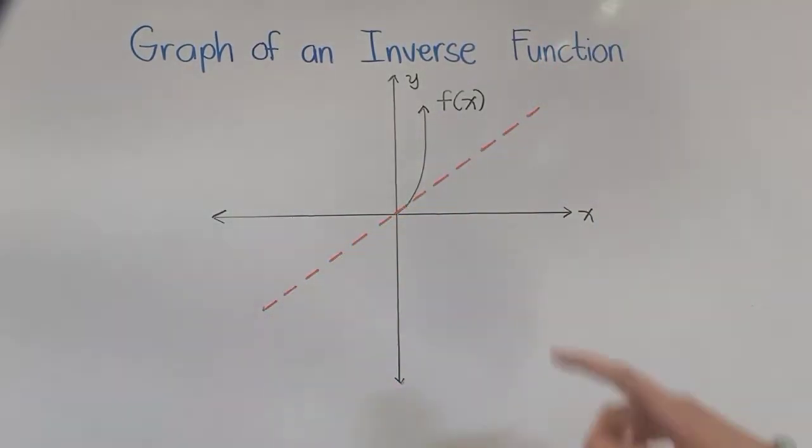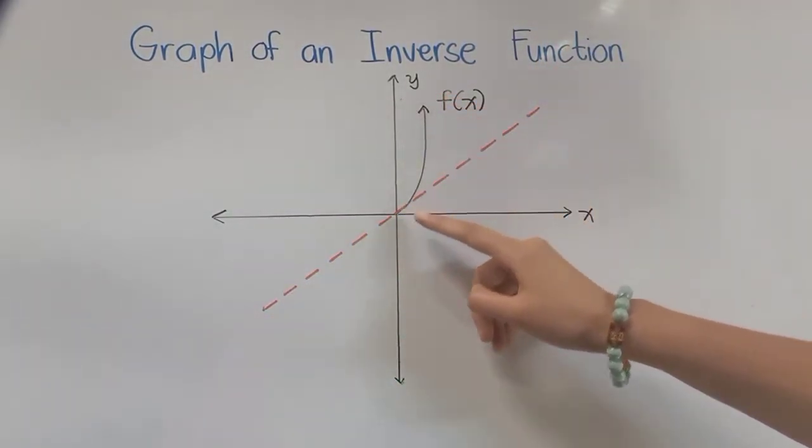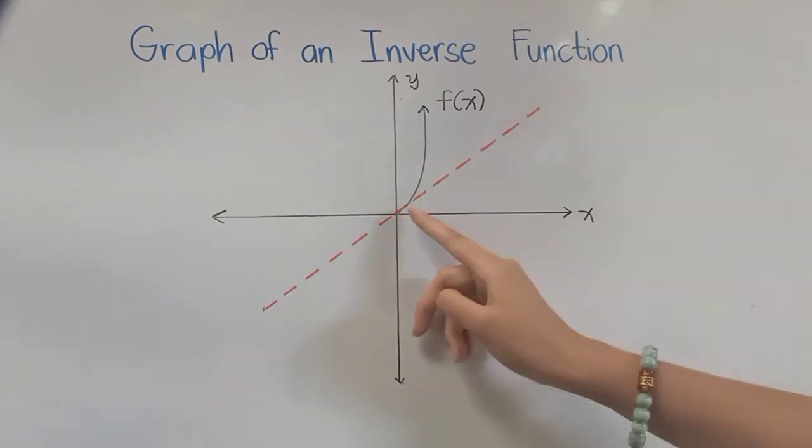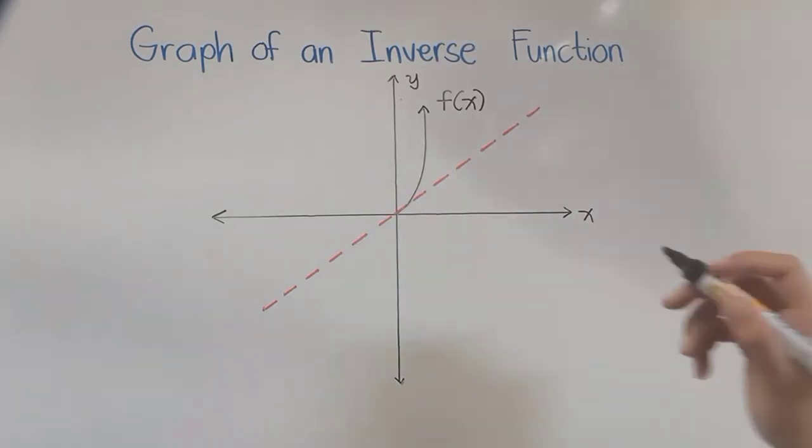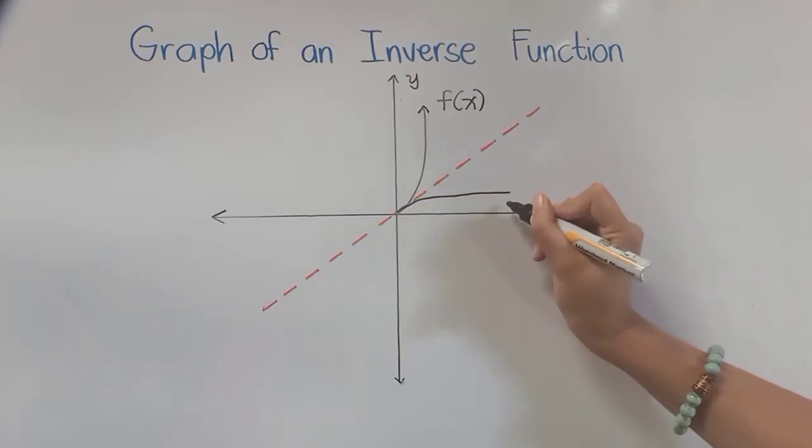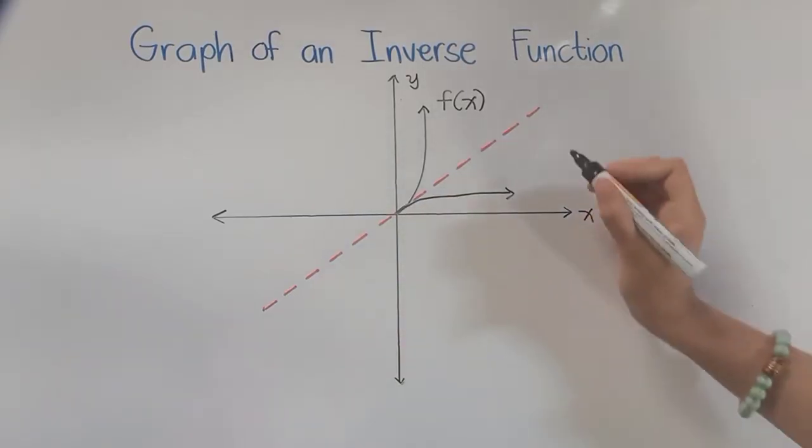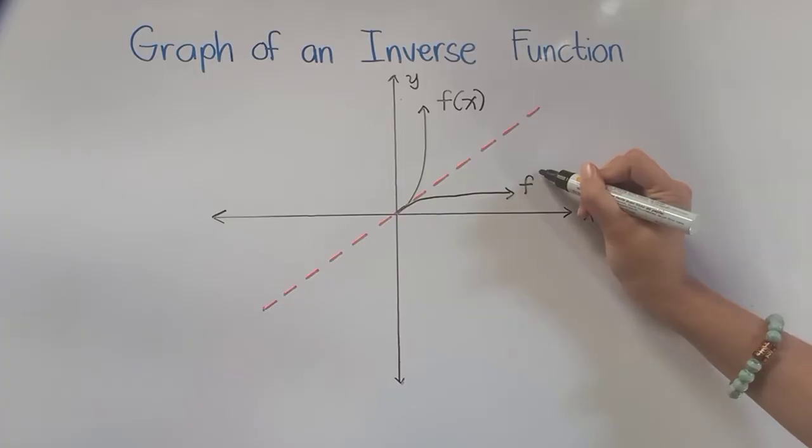And now, our inverse function is actually the reflection of our function from this line. So if it's going up, our inverse function here is going to the right. In symbol, that is f^(-1)(x).